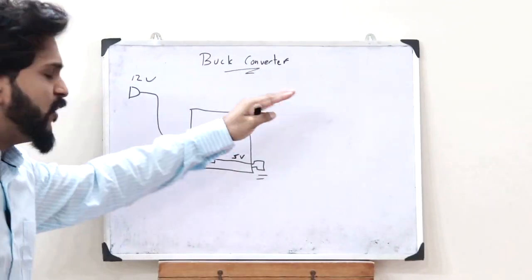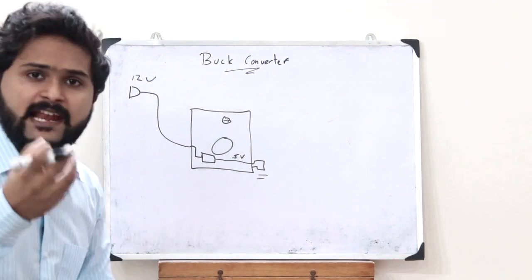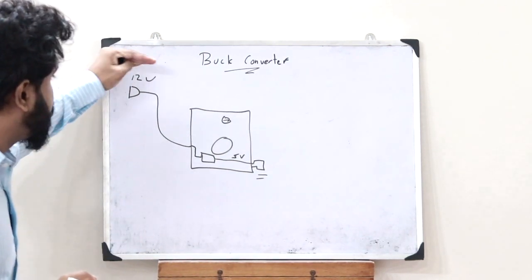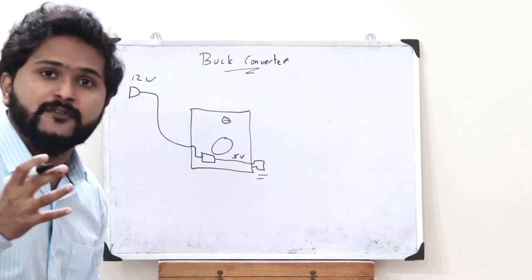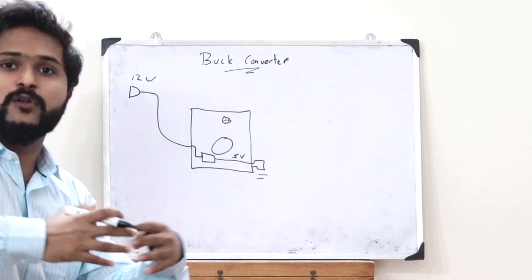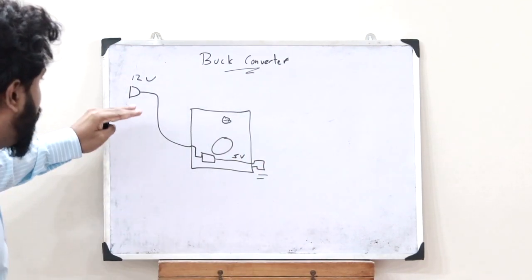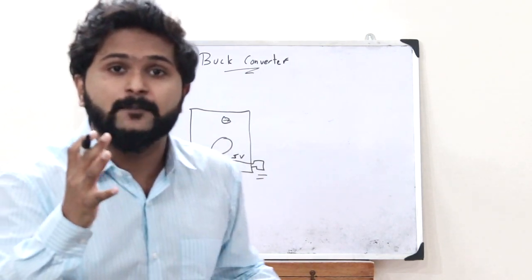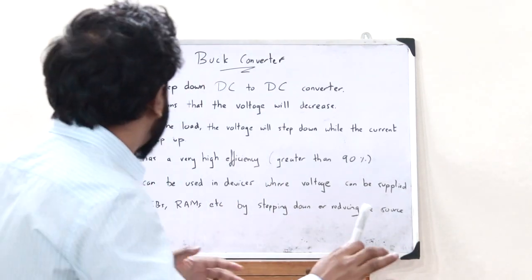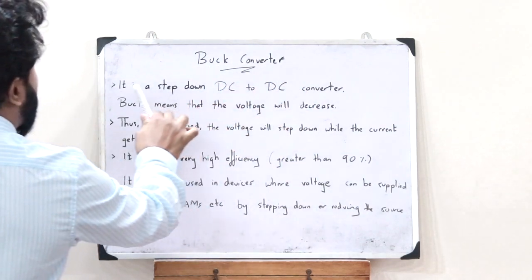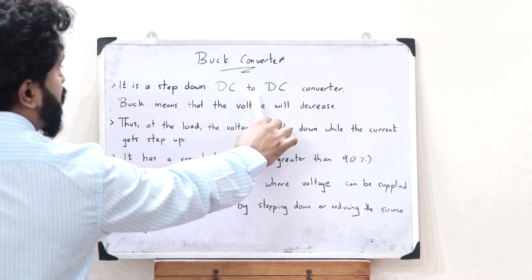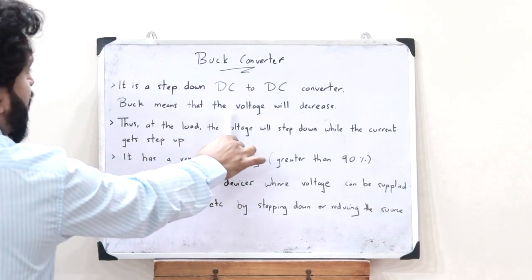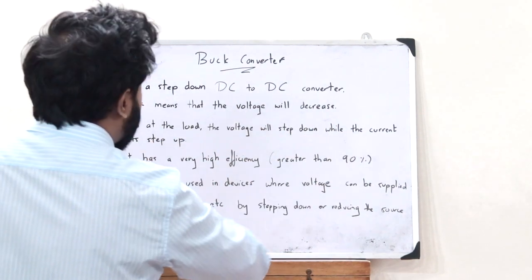A buck converter is very efficient. It is highly efficient because converting a higher voltage to a lower voltage involves no loss in voltage. Therefore it is highly efficient, with an efficiency of around 90 percent. So to summarize: a buck converter is a step-down DC to DC converter where 'buck' means the voltage will decrease.